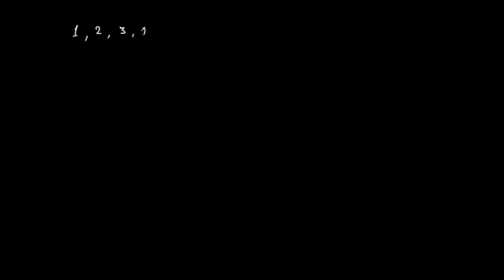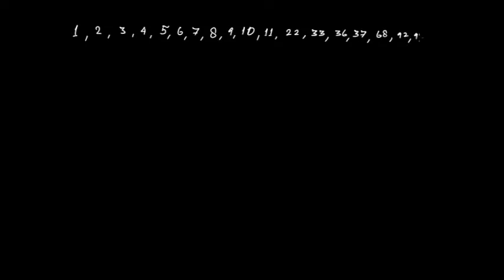Now let's discuss even numbers and odd numbers. Suppose you have numbers like 1, 2, 3, 4, 5, 6, 7, 8, 9, 10, then 11, then 22, then 33, 36, 37, 68, 92, 93 and 100. Suppose you have all these numbers and you are asked which numbers are even numbers and which numbers are odd numbers.